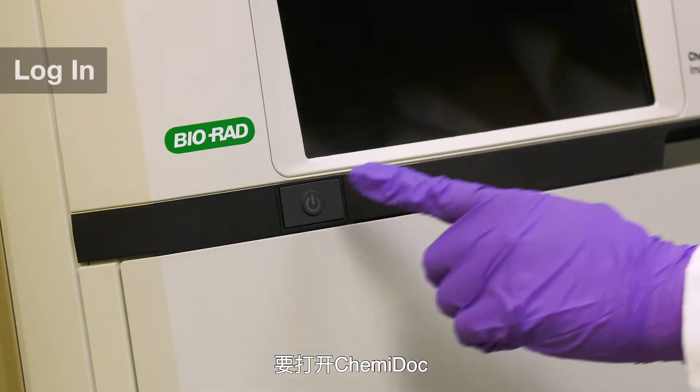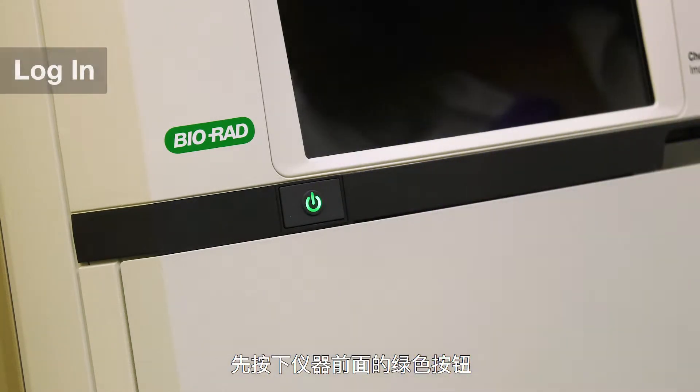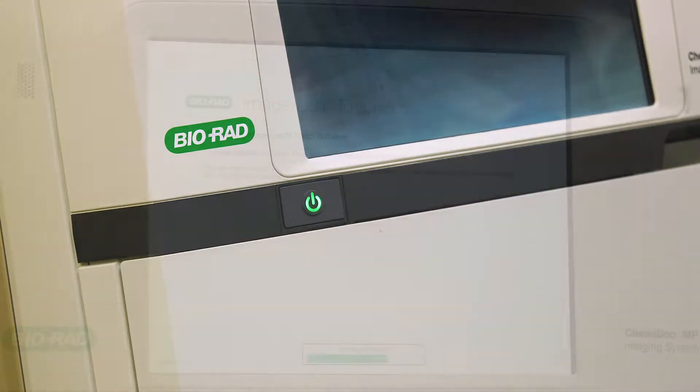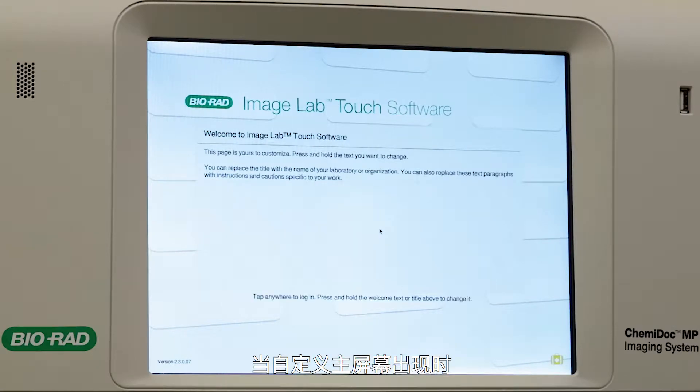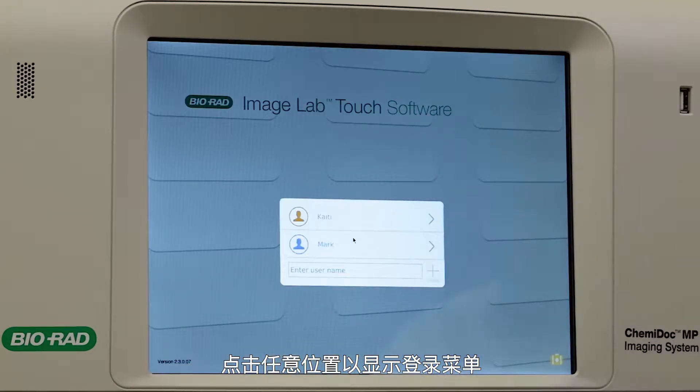To turn your KemiDoc on, push the green button in front of your instrument. When the customizable home screen appears, tap anywhere to bring up the login menu.